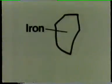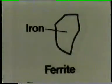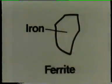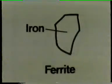The light grains, like this one, are made up of iron. Engineers call them ferrite. These give steel the property of ductility.